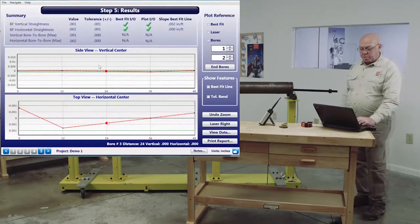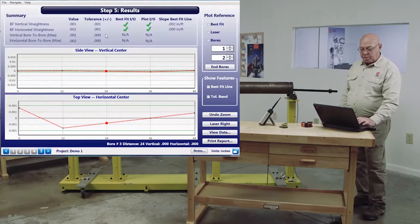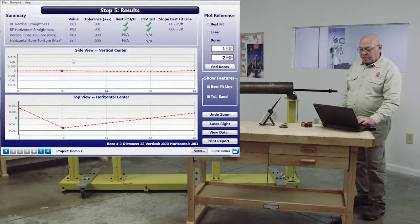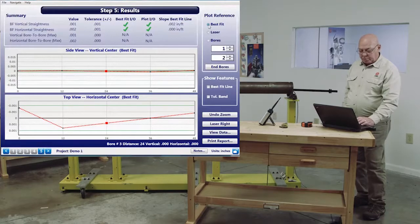This is going to take me to the result screen. And I can see at the top of the screen here, my vertical straightness and my horizontal straightness are all within tolerances.